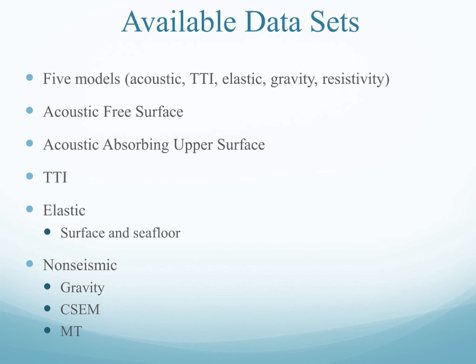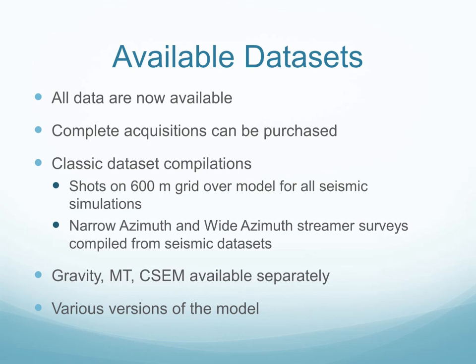There's acoustic free surface data, absorbing upper surface seismic data, tilted transverse isotropic data, elastic data, and non-seismic data including gravity, controlled source EM, and magnetotelluric. All the data are now available and can be purchased through SEAM. Not only can full data sets be purchased, but we've also created classic data set compilations, such as shots on a 600-meter grid covering the entire model for all seismic surveys, or narrow azimuth or wide azimuth streamer surveys. Gravity, magnetotelluric, and CSEM data are also available separately, and the model is available in various versions.